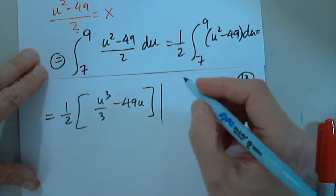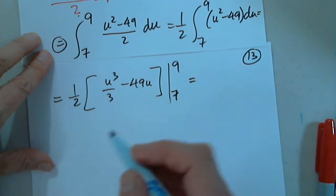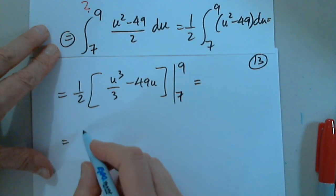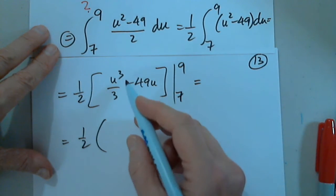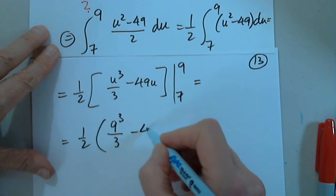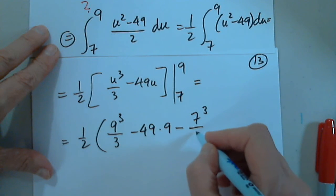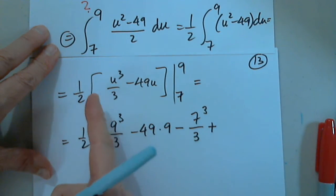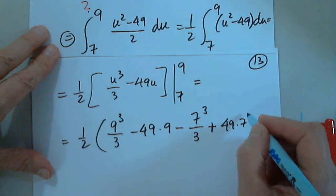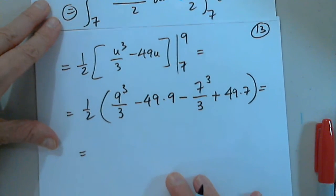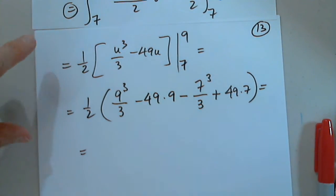Do not go back to x. There is no need. x is gone. And now I plug in. So I have one half. Nine to the third over 3 minus 49 times 9, and minus 7 to the third over 3, but plus, remember there's a minus that I have to distribute, plus 49 times 7.